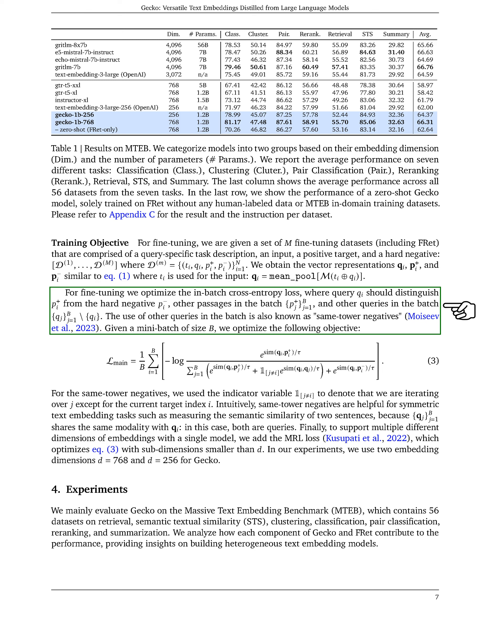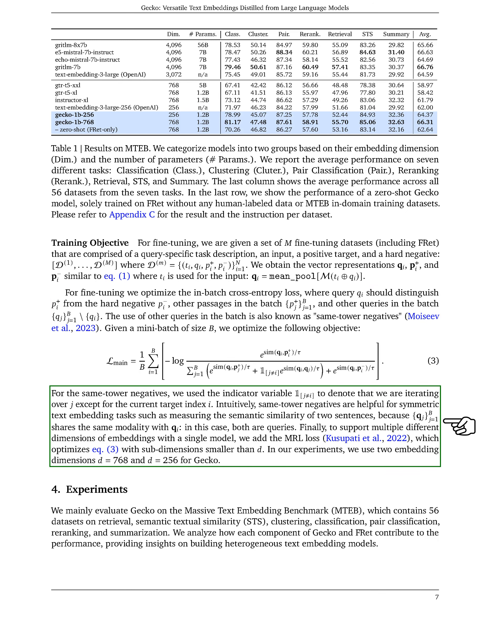We also consider same-tower negatives, where we iterate over all queries in the batch except for the current target index. This helps in tasks like measuring the similarity between two sentences. Additionally, we introduce the MRL loss to support multiple embedding dimensions within a single model. Moving on to the experiments, we evaluate our model, Gecko, on the Massive Text Embedding Benchmark, MTEB, across various tasks such as retrieval, semantic textual similarity, clustering, classification, and summarization.